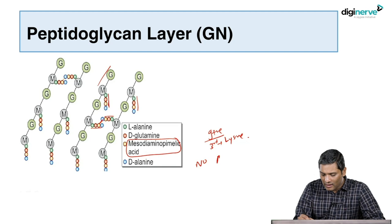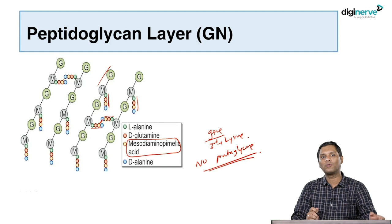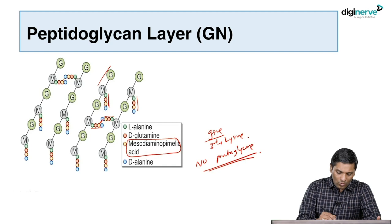Another difference is that in gram-negative cell wall the adjacent tetrapeptides are directly linked to each other — there is no pentaglycine bridge. In gram-positive cell wall, both tetrapeptide side chains are connected to each other by a pentaglycine bridge, whereas in gram-negative the pentaglycine bridge is absent and both side chains are directly connected to each other.